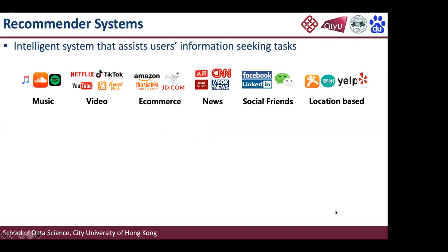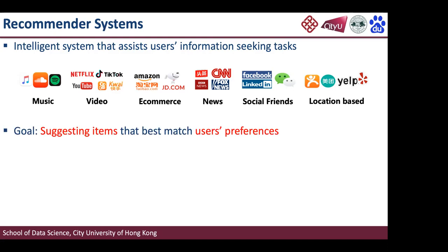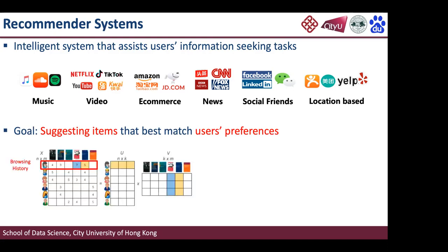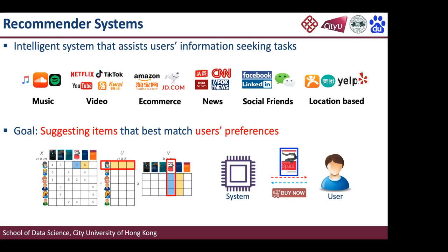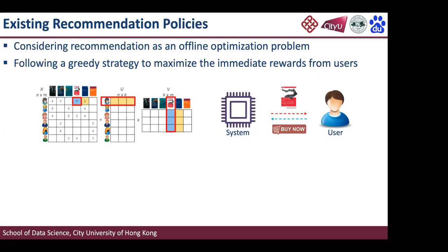As introduced before, we receive a lot of information every day from different platforms, and the recommender system is a way to help us locate the information we want. The task of recommendations is to suggest items that best match user's preference. For a typical recommender system, we do two things: first, we learn the user's preference from their profile, such as gender, age, and browsing history; and second, we suggest items that match that preference.